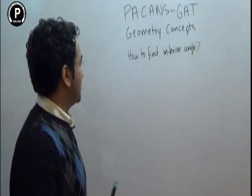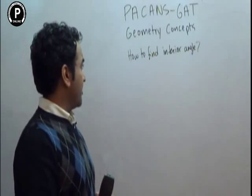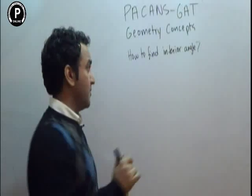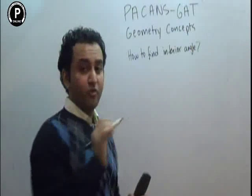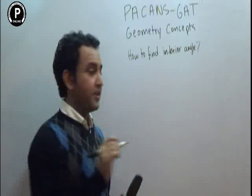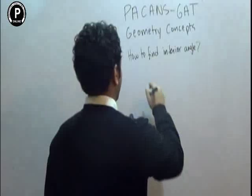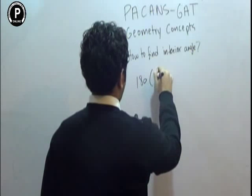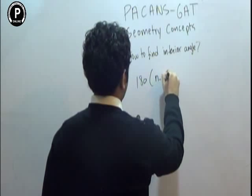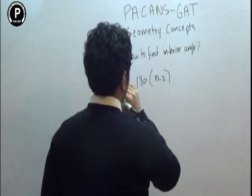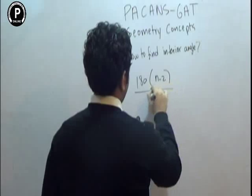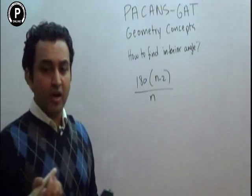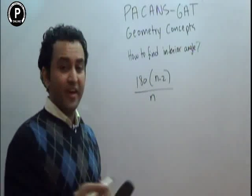Welcome to Peckins GATT Geometry Concepts: How to Find Interior Angle. There is a formula to find the interior angle, which is 180 times (n minus 2) over n. So if you want to find the interior angle of any shape, you can use this formula.